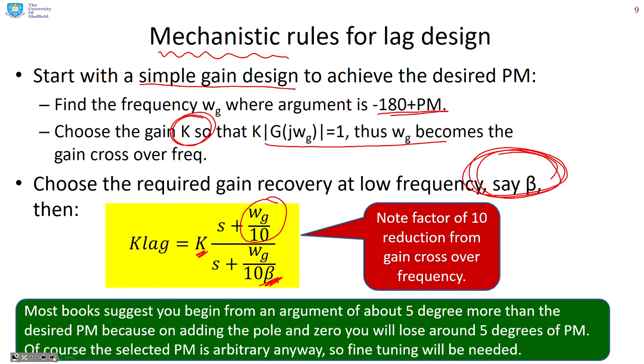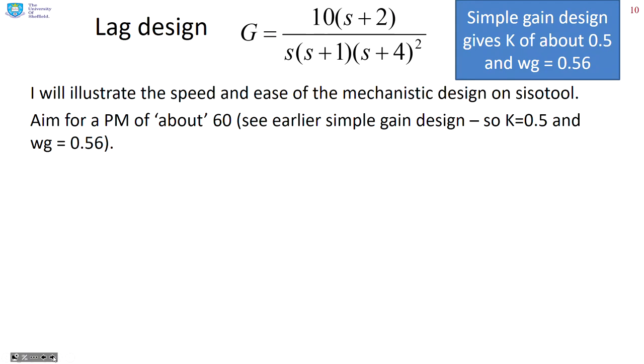Most books suggest you begin from an argument about five degrees more than the desired phase margin, because when you add the lag, you'll lose a little bit of phase margin. But the original phase margin is somewhat arbitrary anyway, and you might need to do some fine tuning — so whether this is necessary is a bit of a moot point.